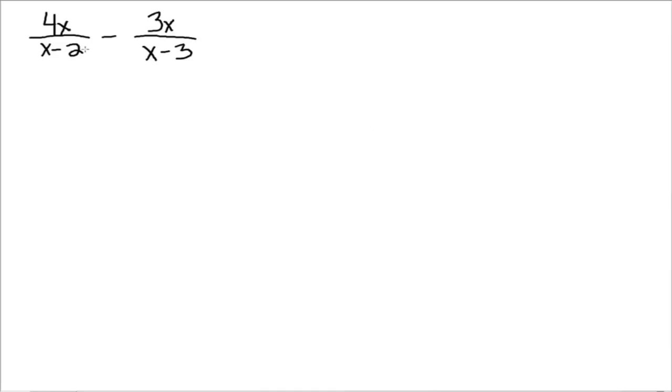In order to get a common denominator, first we want to make sure that you completely factor all your denominators. Well in this case you just have x minus 2 and x minus 3. They're already factored. There's not much we can do about that.